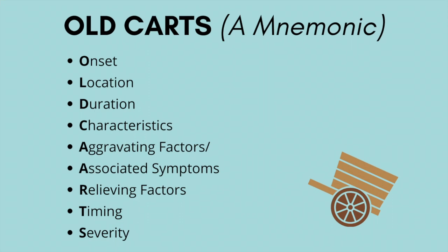In the US, clinicians are taught a mnemonic when they're in school, and it is OLD CARTS. O is onset, L is location, D is duration, C is characteristics, A is either associated symptoms or aggravating factors, R is relieving factors, T is timing, and S is severity.